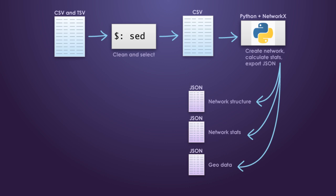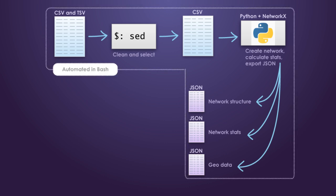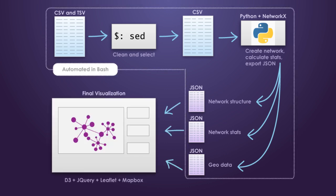Recalculating and creating new networks is made easier by wrapping this process within a bash script that can be run whenever new data or subsets are desired. The JSON files are then read by the tool, which uses D3 to visualize the network and its characteristics. A map view based on Leaflet and Mapbox displays the geographic distribution of the network.